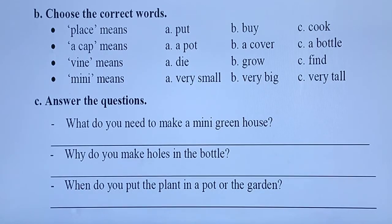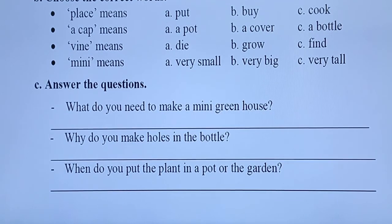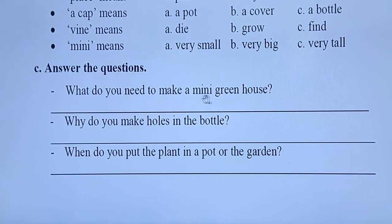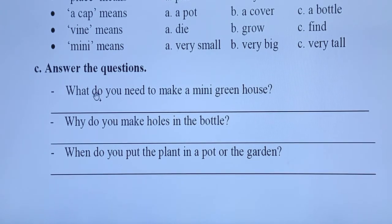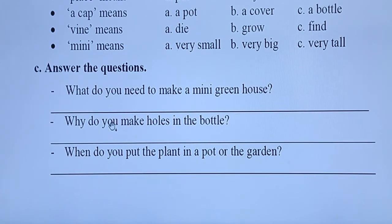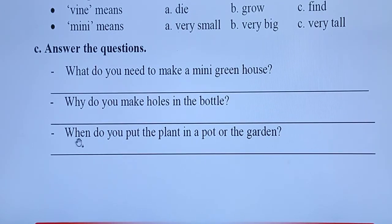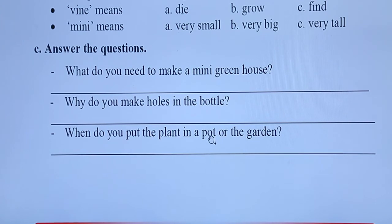The next part will be your homework. Answer the questions: number one — what do you need to make a mini greenhouse? نام بگیرین از متن و بنویسین. Number two — why do you make holes in the bottle? از متن جواب پیدا بکنین و بنویسین. The last one — when do you put the plant in a pot or the garden? The answer is also in the reading; you can find and write down the answer.